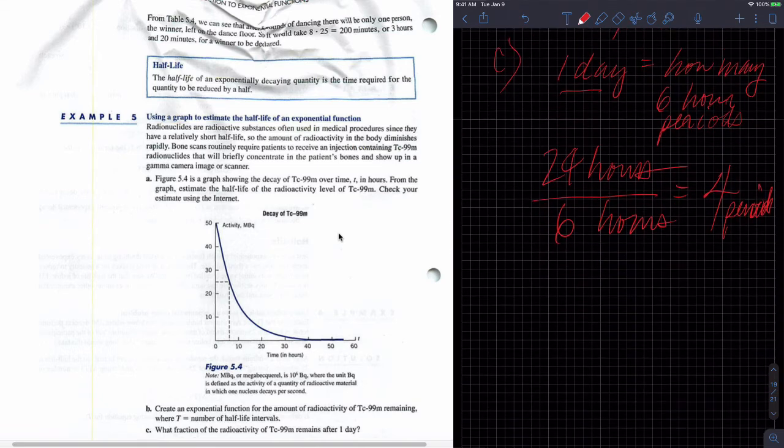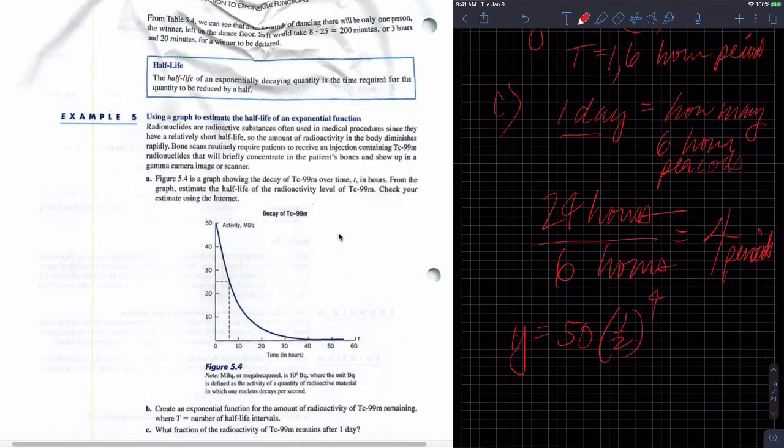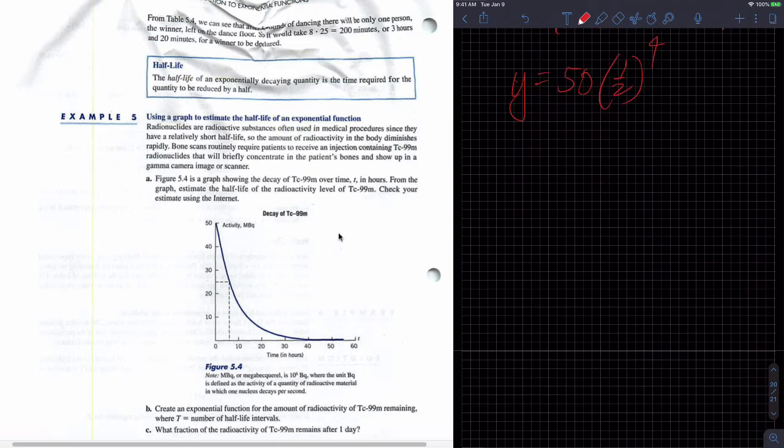So in one day, that's 24 hours. How many 6 hour periods is that? So I'm going to divide it by 6 hours. I'm going to get 4 periods, right? 4 half-life periods. So once I know that, I can put it in my formula that I made up here and say Y or Q or whatever is equal to 50 times 1 half raised to the 4, 4 half-life periods.